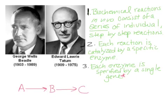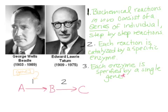Each reaction is catalyzed by a specific enzyme — enzyme number 1, enzyme number 2, for example — and each enzyme is specified by a single gene. So gene 1 will code for the production of enzyme number 1. It's your genes that influence these biochemical or biosynthetic pathways, which influence your phenotype. I did put a star on number 3 because now we know that enzymes are not necessarily coded for by only one gene — sometimes multiple genes can code for the production of a functional enzyme.